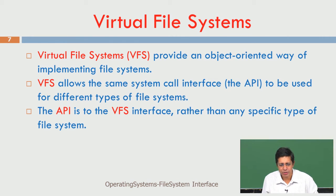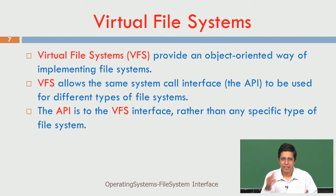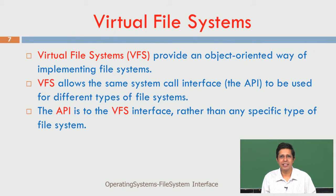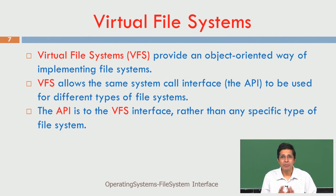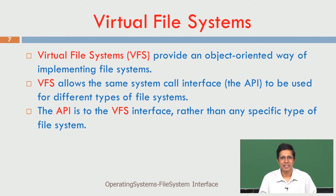Now let us look at the virtual file system. The virtual file system provides an object-oriented way of implementing file systems. VFS allows the same system call or API - application programming interface - to be used for different types of file systems. Whether I use a USB, CD, SD card, flash, or different varieties of disk, a C program whether opening on SSD or anywhere uses only fopen, fscanf, fprintf, fclose - a single interface independent of where the file is stored.